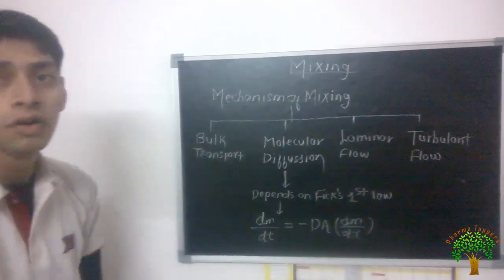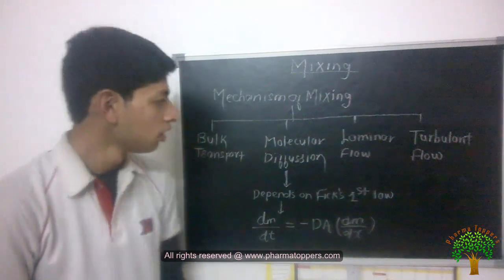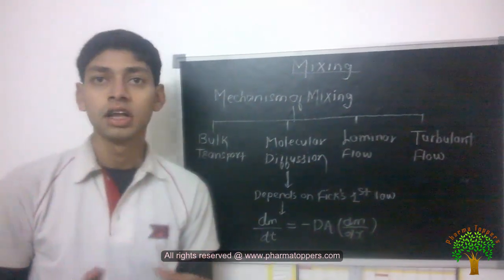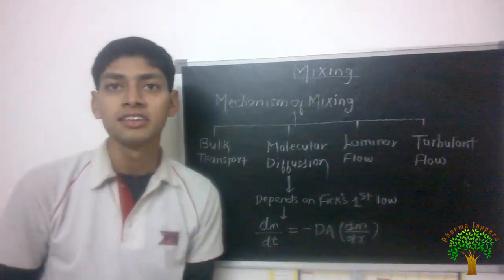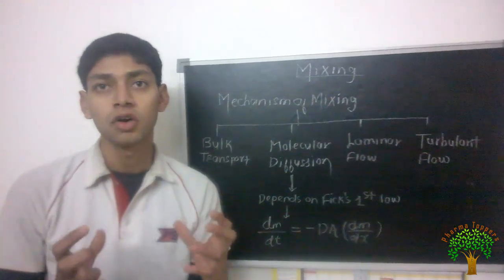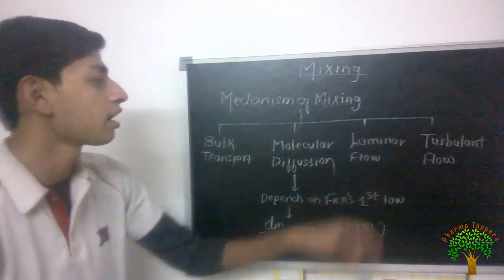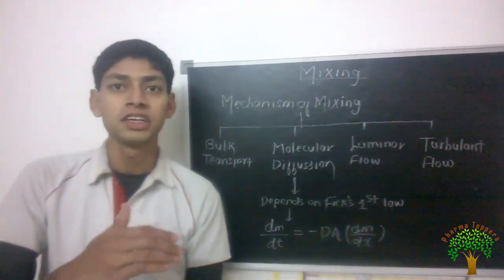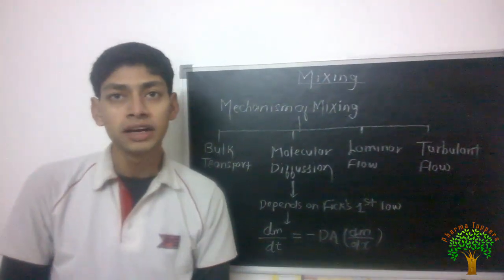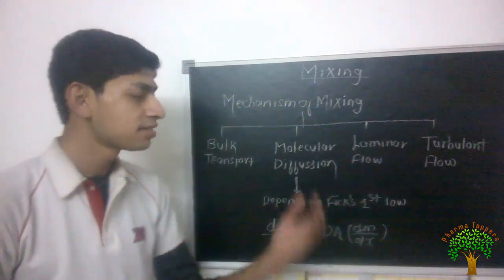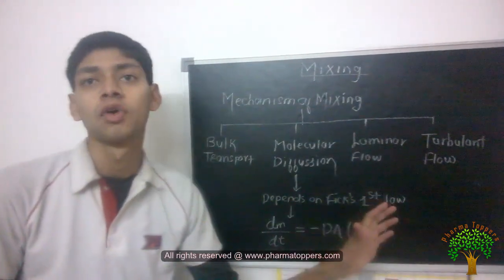Now third one is laminar flow. When the liquids are viscous in nature, when the mixture of that solution becomes very viscous, at that time flow will be like laminar because fluid velocity is decreasing, and due to that only the mixing can happen by the laminar flow only.